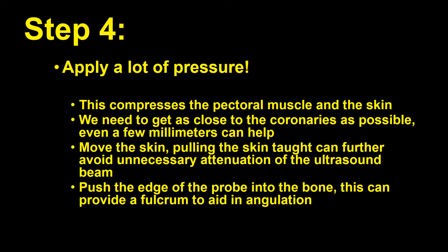It takes a lot of pressure to do this. The reason is we want to compress the pectoral muscles and the skin to get as close to the coronaries as possible — even a few millimeters can help. Remember to move the skin around. Pulling the skin taut can further avoid unnecessary attenuation of the ultrasound beam. Don't be afraid to push the edge of the probe into the bone, as this can provide a fulcrum where you can change your angulation.